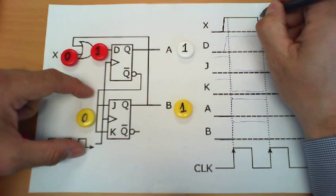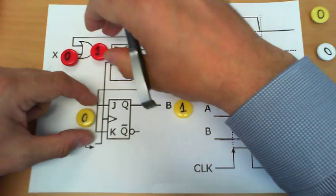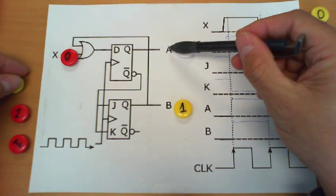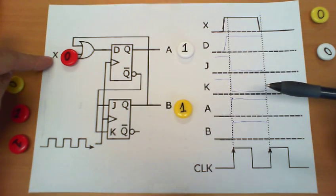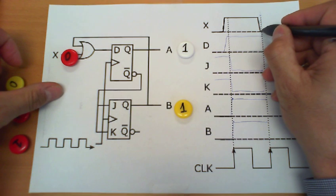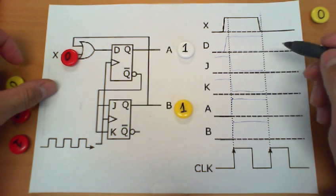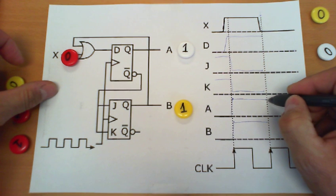Therefore, in the instant immediately after the clock edge, this is the status of these three signals: X, A, B. And as we can see, X will remain 0. This is an input. A and B will remain 1.